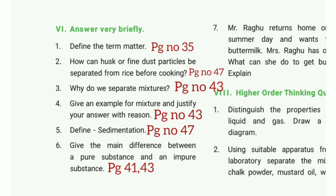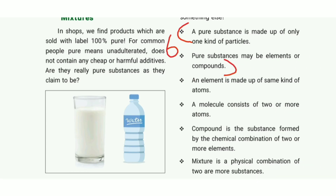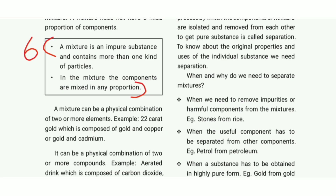Sixth question: give the main difference between a pure substance and an impure substance. Take page number 41. Pure substance is made up of only one kind of particles; it may be elements or compounds. A mixture is the impure substance and contains more than one kind of particles. In a mixture, the components can be mixed in any proportion.